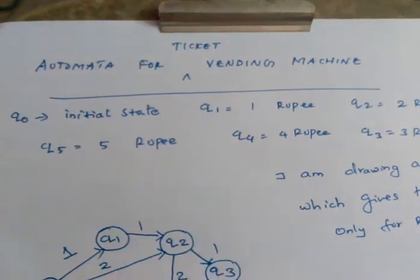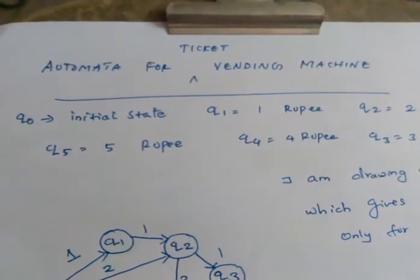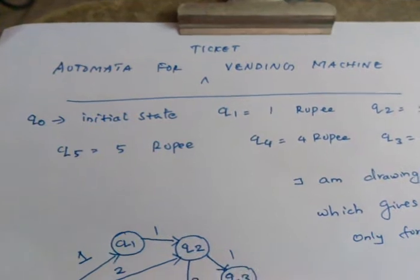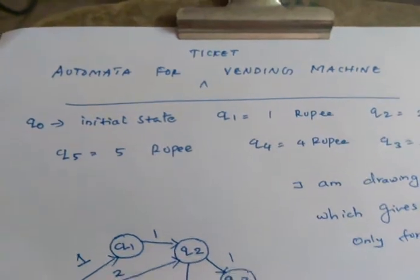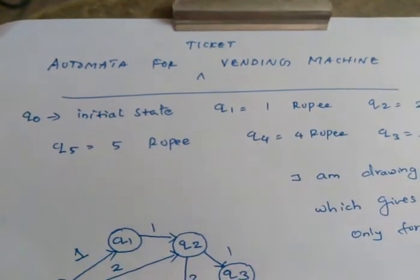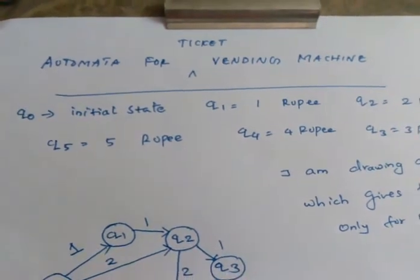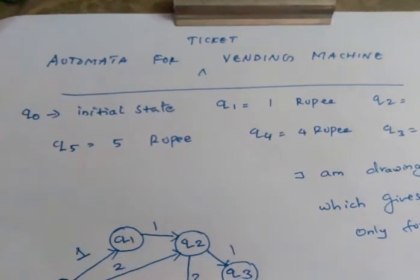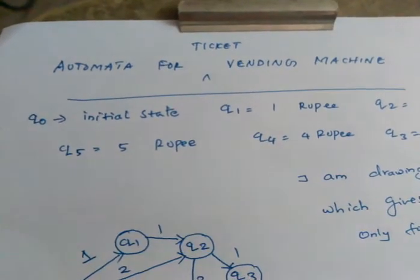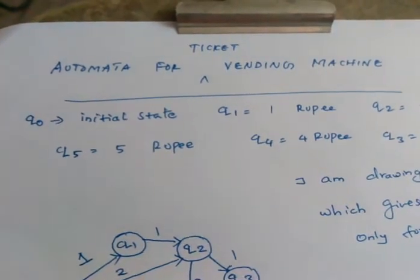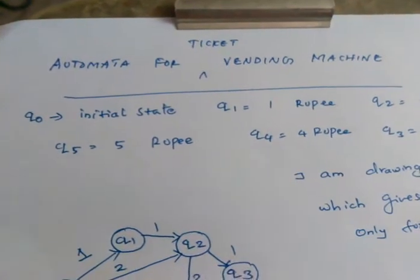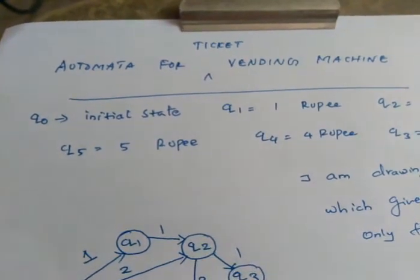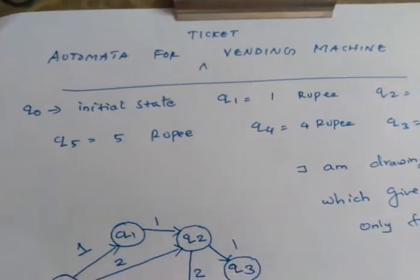Hi friends. Now we are going to look at Automata for a Ticket Vending Machine. The Ticket Vending Machine is available in railway stations. We can model it as a mathematical model — this is a hardware system that we can represent mathematically.